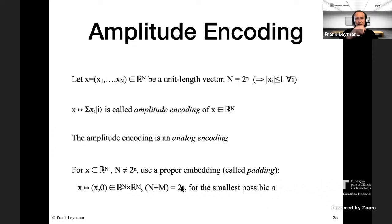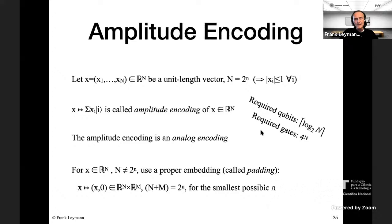Amplitude encoding requires only log_2(n) qubits — very nice if the dimension is 2^n, you only need n qubits. However, you require 4^n gates to compute it, so this is not something you can realistically apply in today's NISQ era. Additionally, if the vector is not a zero vector, you must classically compute the norm of the vector and use it in the amplitude encoding.